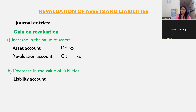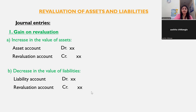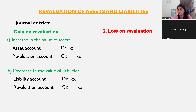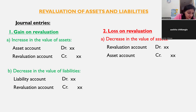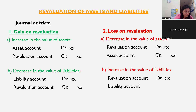Loss on revaluation occurs when the value of assets decreases or when the value of liabilities increases. For a decrease in the value of assets, the journal entry is: revaluation account debited and asset account credited. For an increase in the value of liabilities, the entry is: revaluation account debited and liability account credited. All losses appear on the debit side of the revaluation account.